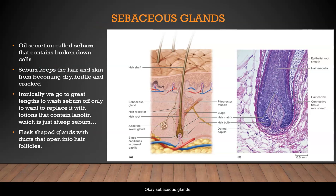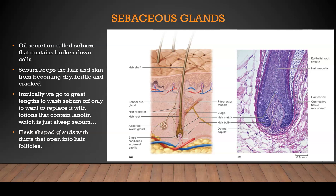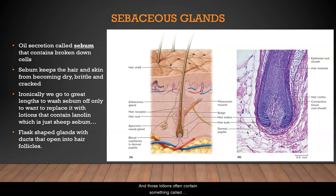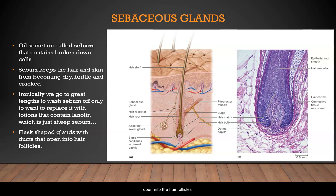Sebaceous glands secrete an oil called sebum that contains parts of broken down cells. Sebum helps keep the hair and skin from becoming dry, brittle, and cracked. Interestingly, we go to great lengths to wash the sebum off, only to replace it with lotions that often contain lanolin — which is just sheep sebum. These are flask-shaped glands with ducts that open into the hair follicles.